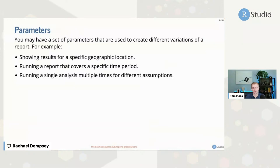You may have used parameters in R Markdown, or maybe you never used them before. Parameters work inside Quarto as a way to create different variations of the same document by changing out small components. Most commonly, you see examples like: I want to create a report for a specific region. For today's Tidy Tuesday data, it's 50 different states, and you could imagine wanting to generate a report for Texas as well as Massachusetts, New York, or California — all these different states that you want to create separate reports for.